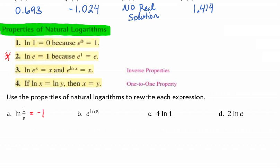To think about this another way — rewriting as an exponent — remember that a natural log has a base of e. We're asking: e to what power equals 1 over e? That question mark is what we're solving for, and that's why the answer is negative 1.